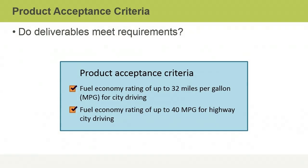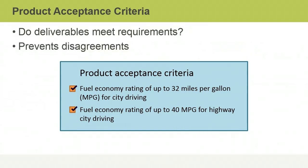A project scope statement should include product acceptance criteria. These are the standards stakeholders and the project team agree to use to judge whether the project's deliverables have met requirements. The criteria play an important role at the close of a project or any of its phases. They are used to verify scope and to confirm completion and acceptance of deliverables. It's important to detail product acceptance criteria, otherwise it's possible that not everyone will agree that a requirement has been met or even that a project is successfully completed.